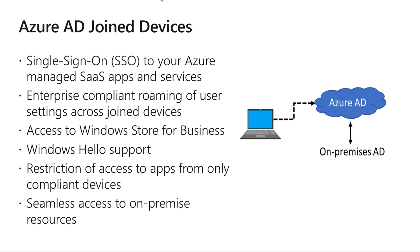Furthermore, there's Windows Hello — support for secure and convenient access to work resources. Microsoft says you don't have to remember the password; the password will remember you. And there's restriction of access to apps only from devices that meet compliance policy. For example, Intune can check whether your phone is on the most recent update — say iOS 11.6 — and if not, you must update your phone before accessing company apps.